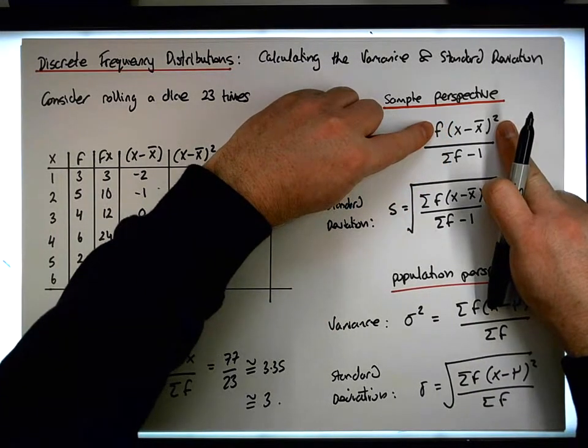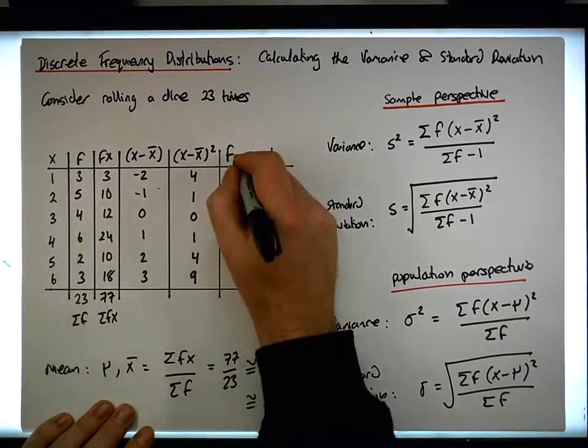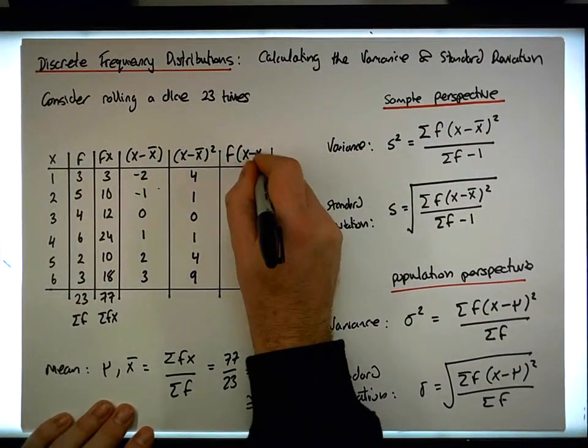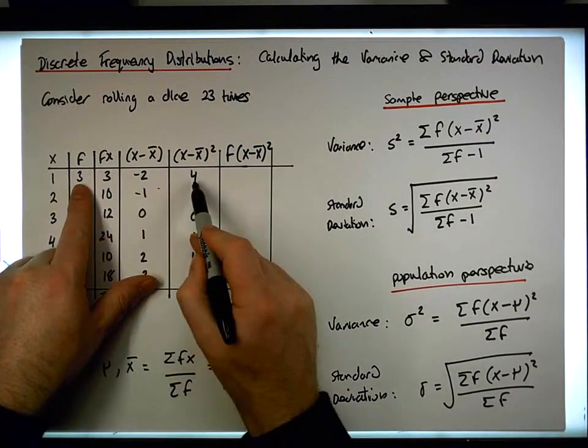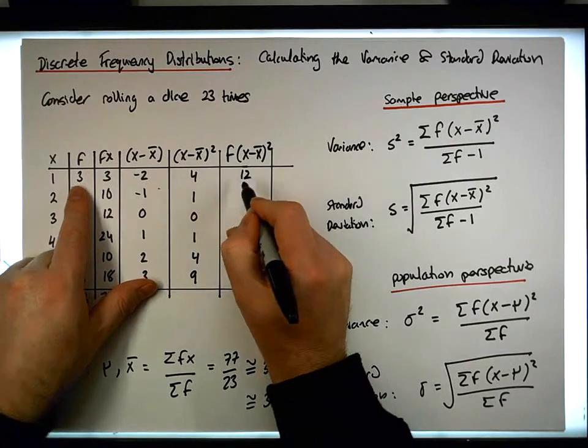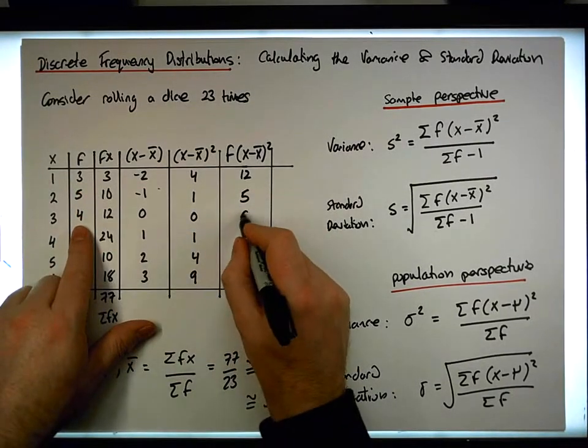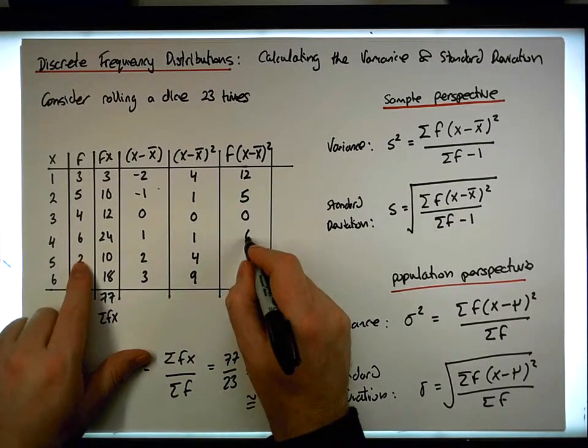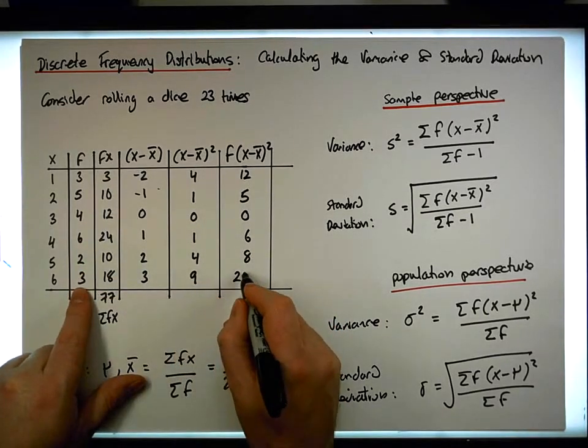So now we need to multiply each one of them by f. So we're going to take the frequency column's values and multiply them by the x minus the x bar squared values. So the first one is 3 times 4 gives me 12. 5 times 1 gives me 5. 4 times 0 is 0. 6 times 1 is 6. 2 times 4 is 8. And 3 times 9 gives us 27.